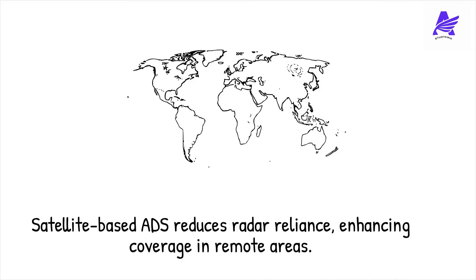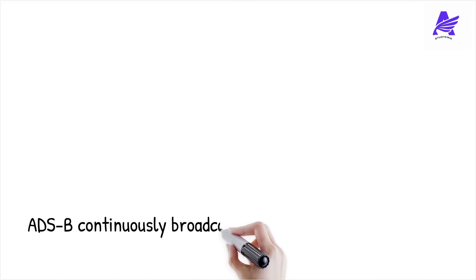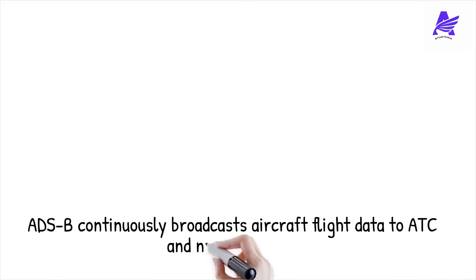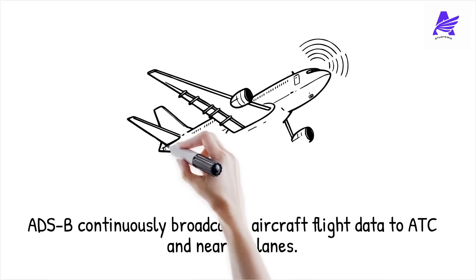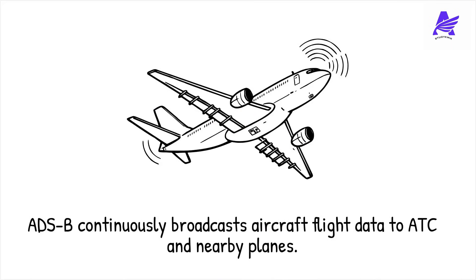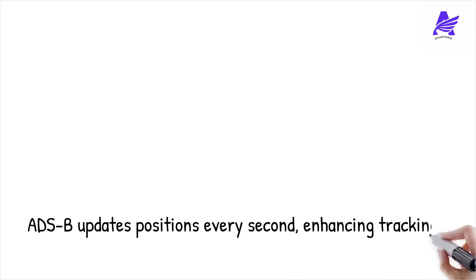ADS-B, Automatic Dependent Surveillance Broadcast, and ADS-C, Automatic Dependent Surveillance Contract. ADS-B allows aircraft to continuously broadcast their flight data to ATC and nearby aircraft. This data includes real-time position, altitude, speed, and heading.